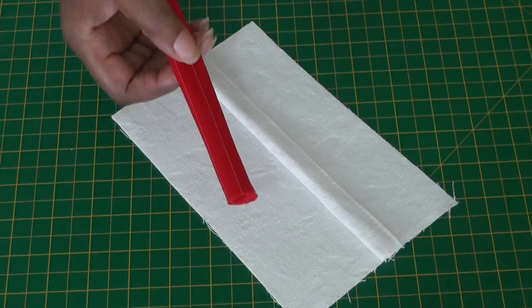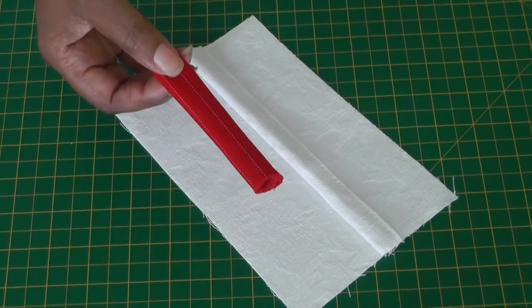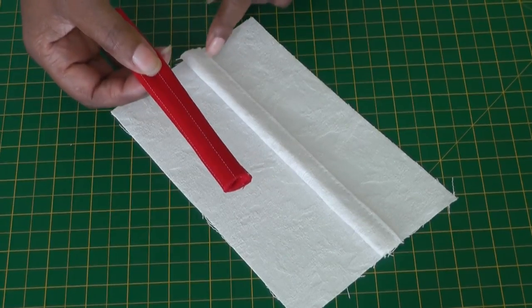What you need is one of these, a wedge which is just made out of scrap fabric. This is what's going to help you sew over a bulky seam.